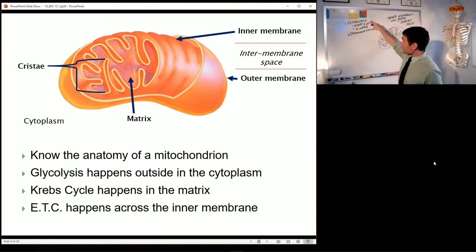Glycolysis. Next thing we're going to do is pyruvate oxidation. Then we have the Krebs cycle, which happens in the matrix. And we have oxidative phosphorylation, which happens across the inner membrane.